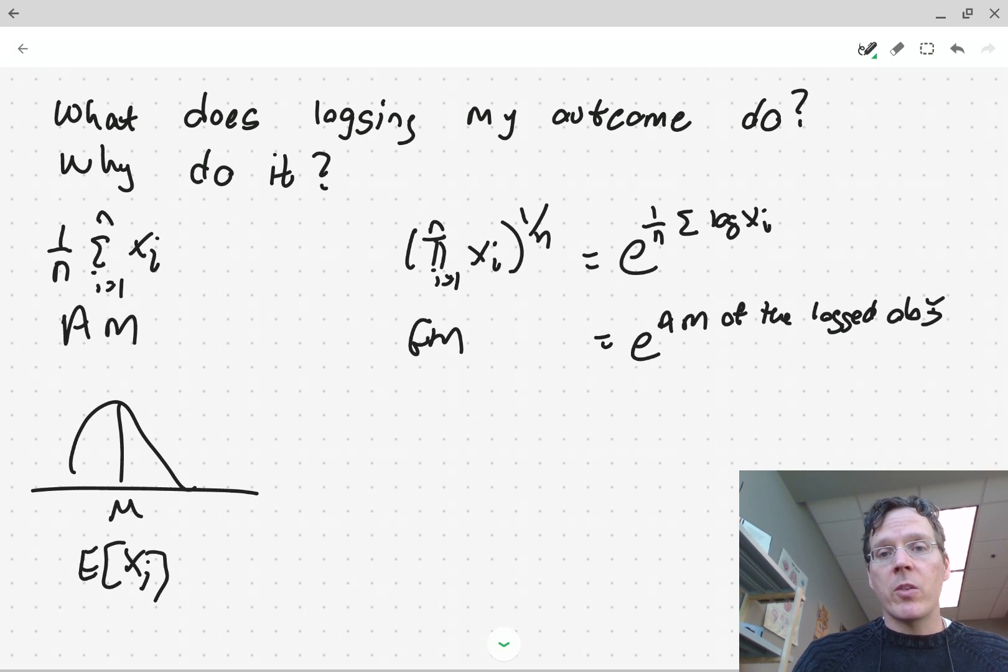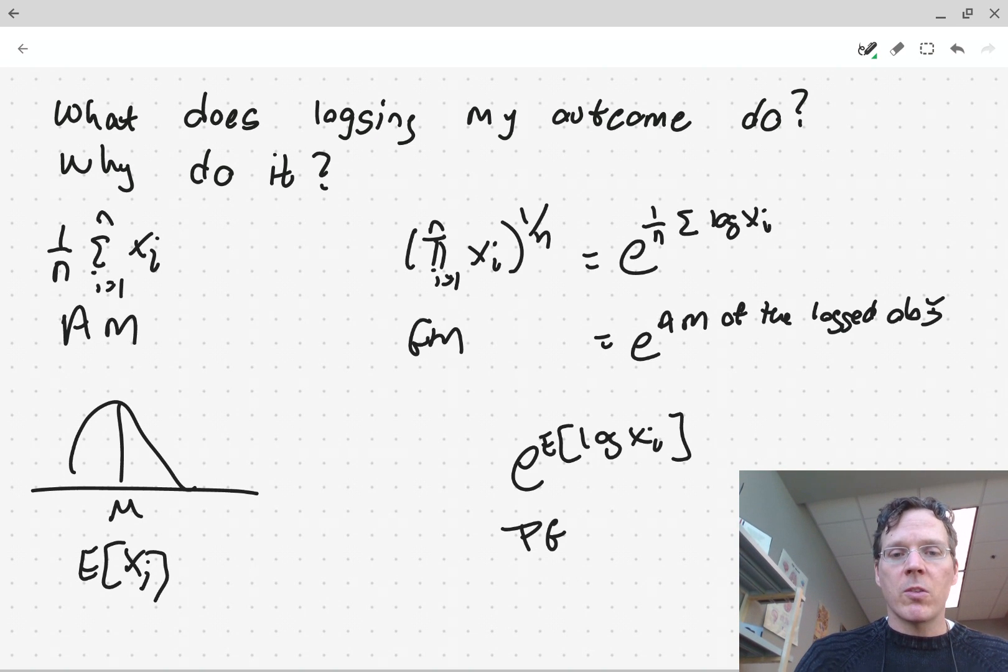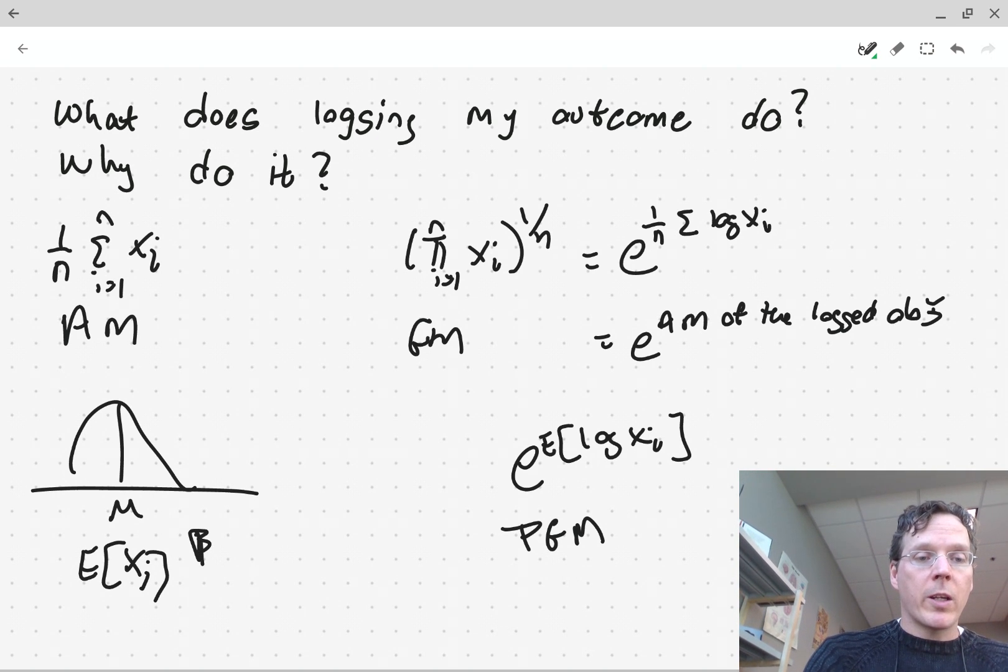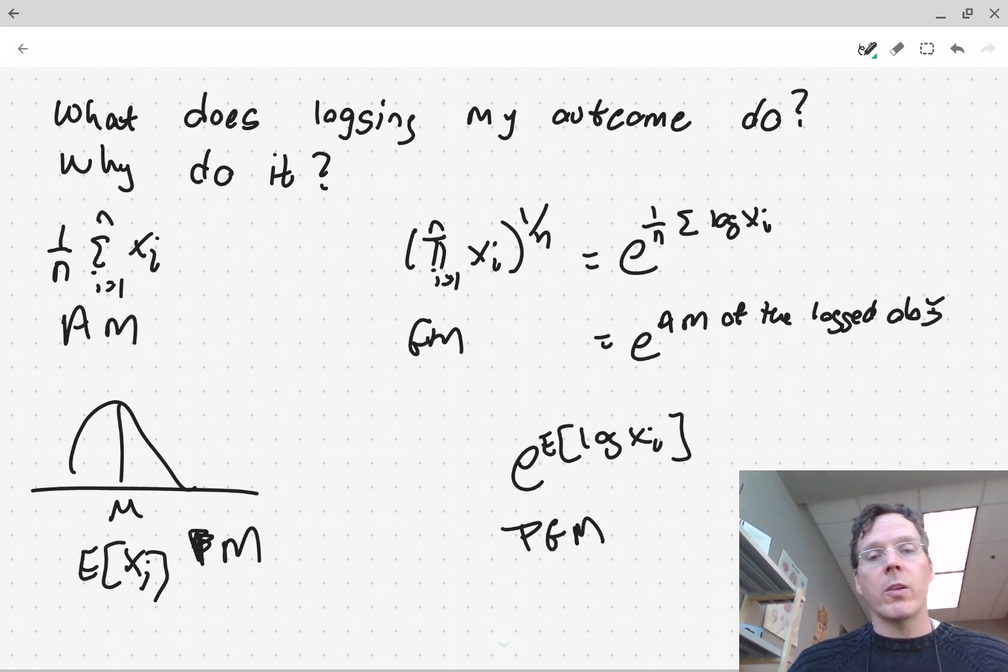The geometric mean, what does it estimate? It estimates something a little bit weird. It estimates e to the expected value of the log of the observation. So take the average value of the logged observations, the population mean of the logged observations, and then exponentiate that. So this is some quantity that we don't usually teach in statistics classes, but I would call it the population geometric mean.